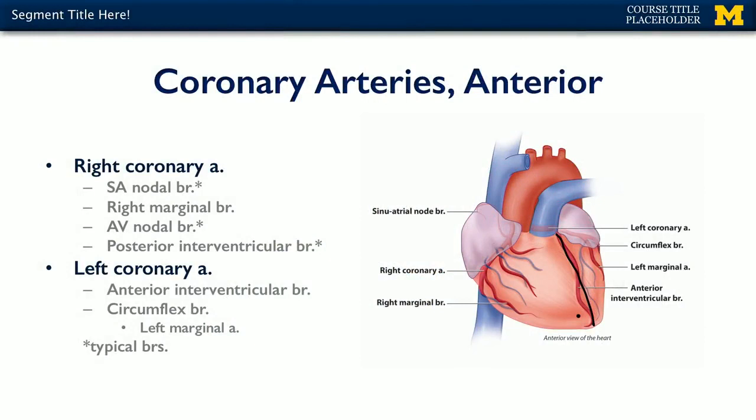When looking at the anterior aspect of the heart, there are really three major arteries we care about: the anterior interventricular branch, the left marginal branch, and the right marginal branch.